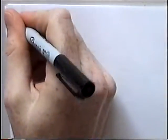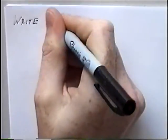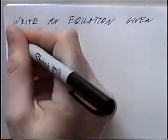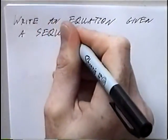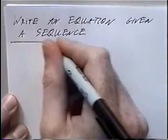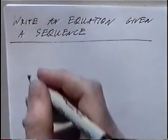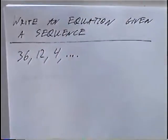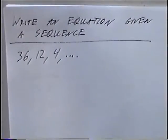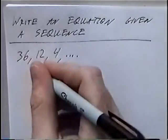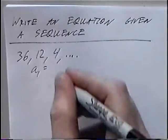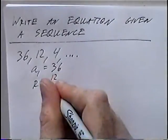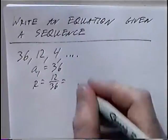The next section is titled 'Write an Equation Given a Sequence.' The first sequence is 36, 12, 4, dot dot dot. To write a formula, we need a sub 1 and the rate. A sub 1, the first term, is 36. The rate is the second number divided by the first: 12 over 36, which reduces to 1/3.